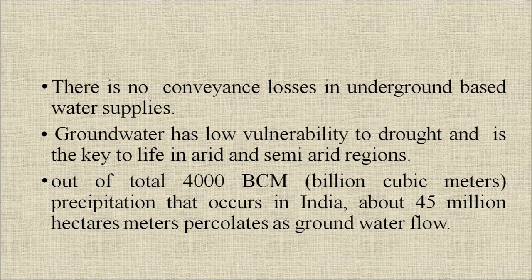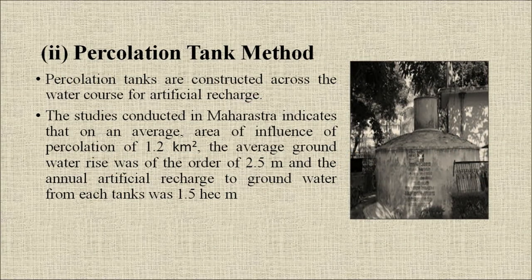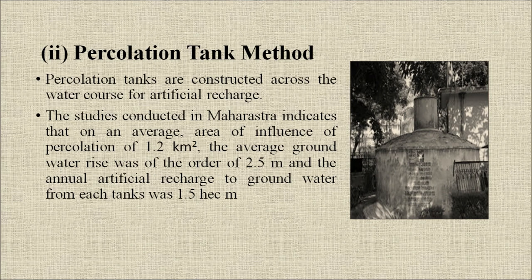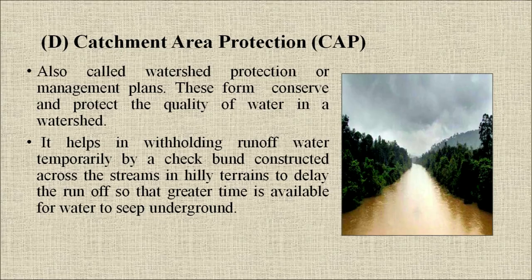Percolation tank method: percolation tanks are constructed across the water course for artificial recharge. Studies conducted in Maharashtra indicate that on an average, the area of influence of percolation is 1.2 square kilometers, the average groundwater rise was of the order of 2.5 meters, and the annual artificial recharge to groundwater from each tank was 1.5 hectare meters.